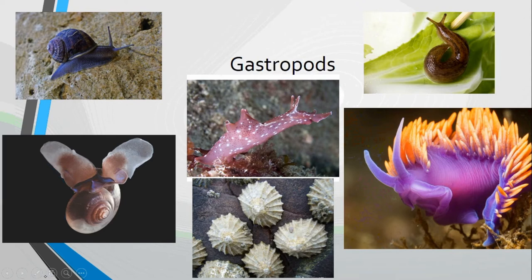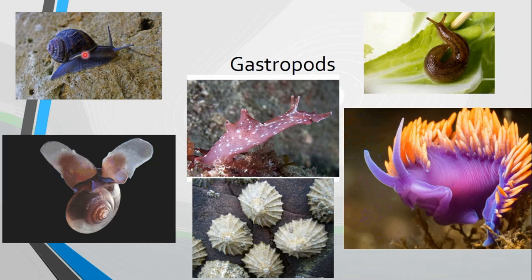So here are your limpets. These are your limpets right here. We talked about these in lesson two where we looked at their foot and how they hold down to the substratum. This is the sea butterfly. You've got the foot and two extensions of the foot that kind of give it the wings. Here you can see the shell. They are not very commonly seen — I've never seen one — but you can see how they got the name. The two wings kind of branch out and give it that butterfly look. And of course we have the snails and the slugs, which are basically just snails without a shell.